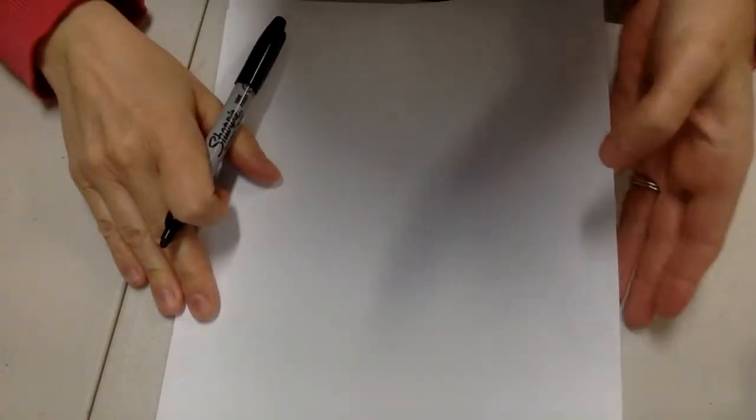So today you're going to need a piece of paper and a pencil. I'm using a black marker so you can see what I'm doing, but you use a pencil in case you make a mistake. Your paper needs to be vertical today, which means up and down.